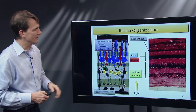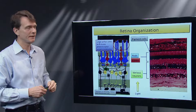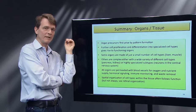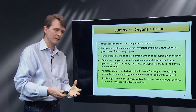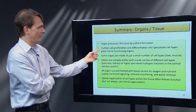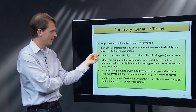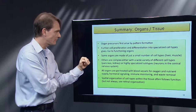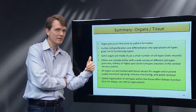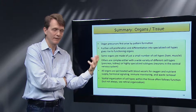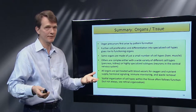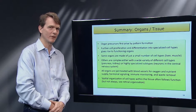That's a more complicated tissue organization. To summarize: organ precursors first arise by pattern formation — the way the organism is initially set up during early embryogenesis, sort of the rough draft. Further cell proliferation and differentiation into specialized cell types gives rise to functional organs. Some organs are made of just a small number of cell types — liver is the detoxifying organ so all cells do more or less the same thing; muscle is all about movement. Other organs are complex, like pancreas or kidney, with a wide variety of different cell types.